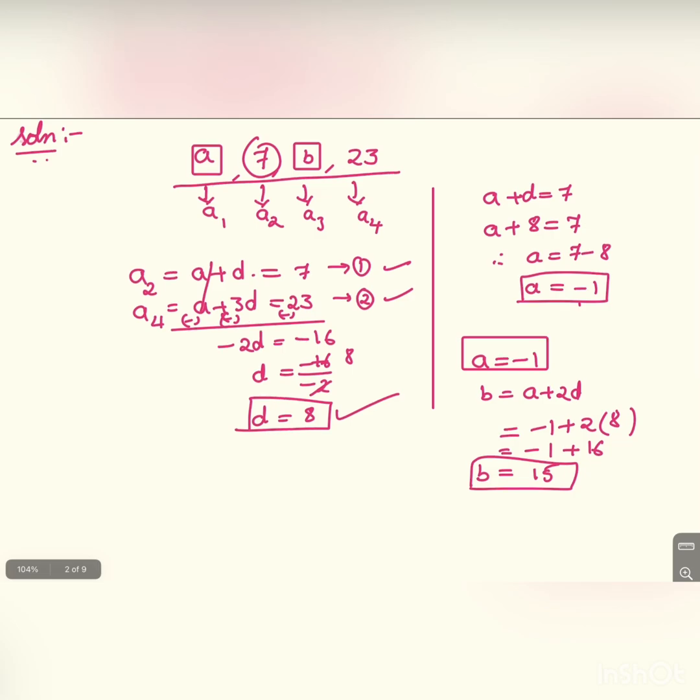And if we write the AP, it is minus 1, 7, 15, 23.